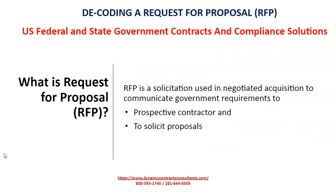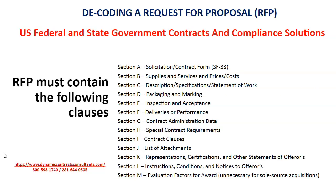An RFP is a solicitation used in negotiated acquisition to communicate government requirements to prospective contractors and to solicit proposals. The RFP must contain the following clauses: Solicitation/Contract Form SF-33, supplies and services and prices/costs, description, specifications, Statement of Work, Packaging and Marking, Inspection and Acceptance, Deliveries or Performance, Contract Administration Data, Special Contract Requirements, Contract Clauses, List of Attachments, Representations and Certifications, and Other Statements of Offerors, Instructions, Conditions, and Notices to Offerors, along with Evaluation Factors for Award — unnecessary for Sole Source Acquisitions.